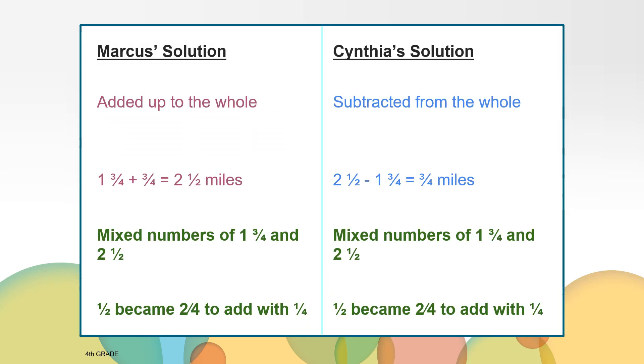What are some ways that Marcus's and Cynthia's solutions are similar? They both used the same numbers and they both had to know that the equivalent for one half was two fourths. Marcus started at one and three fourths and added up to get to two and a half and Cynthia started with the two and a half and subtracted the one and three fourths. Marcus added up and Cynthia subtracted to solve this problem.